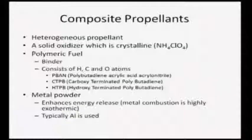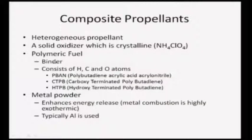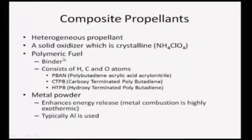In the presence of ammonium perchlorate, the combustion process will be fuel lean because more oxidizer is added. Polymeric fuels are used as the binder, consisting of hydrogen, carbon, and oxygen atoms. The typical types used are PBAN (polybutadiene acrylic acid acrylonitrile), CTPB (carboxyl terminated polybutadiene), or HTPB (hydroxy terminated polybutadiene). These polymeric fuels are used as composite propellants.